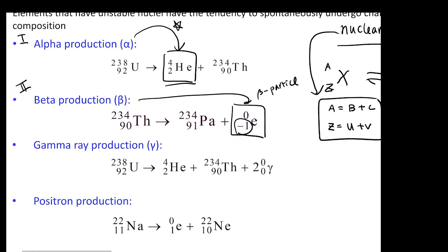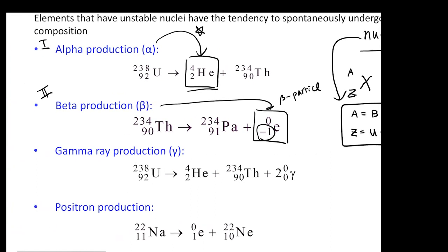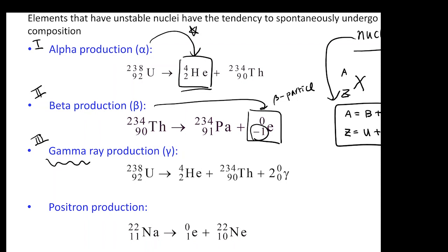And then the third type is actually so-called the gamma ray production. So every time you see this gamma ray production, you are going to produce the gamma particle, which is this guy. You see a symbol of gamma. But that gamma doesn't actually contain any protons and it doesn't contain any mass. A very weird particle here, but it's a gamma particle.